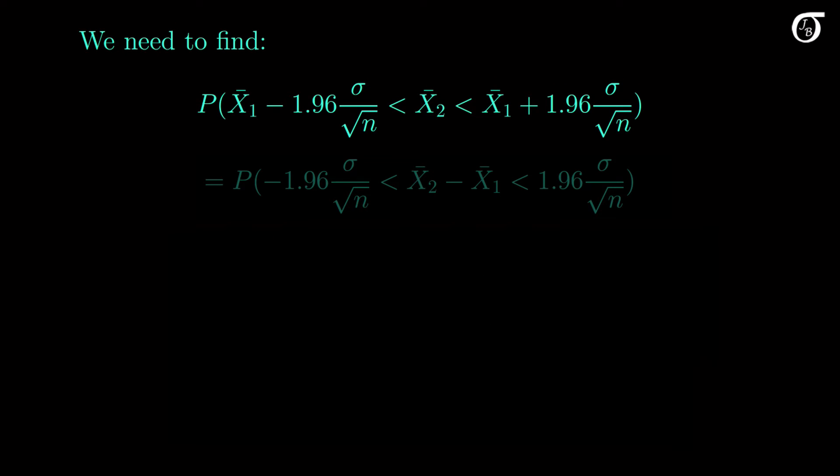In these types of calculations, it's often helpful to bring our random variables together, so I'm going to subtract x bar 1 everywhere. Here the difference in sample means is the only random variable, and everything else is a constant. So we need to know the distribution of the difference in sample means in order to take a shot at figuring out this probability.